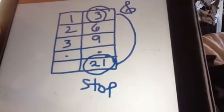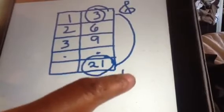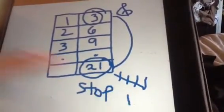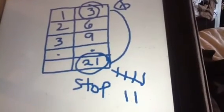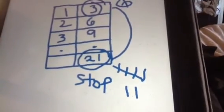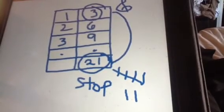So let's sing the 3 song. 3, 6, 9, 12, 15, 18, 21. In this problem, it took us 7 steps to get to 21. 3 times 7 equals 21.